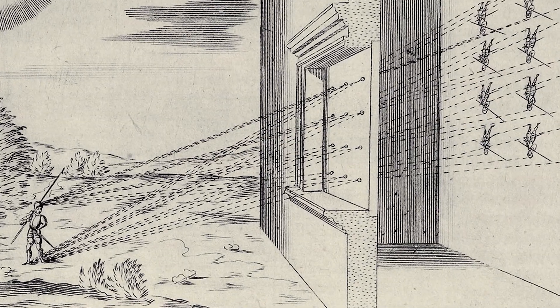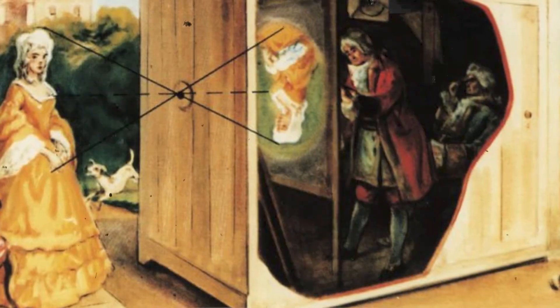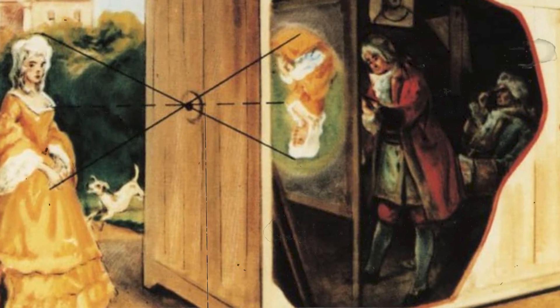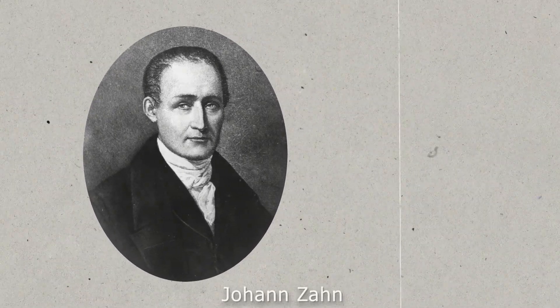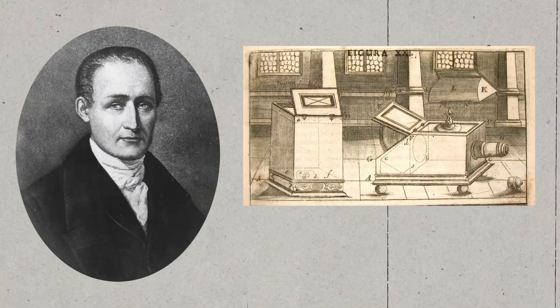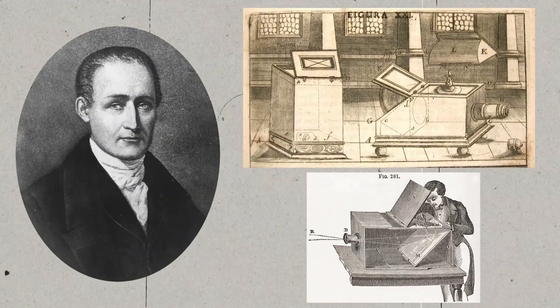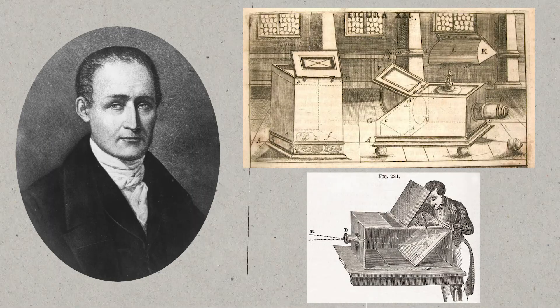The Camera Obscura pioneered the idea of capturing images through optics. Leonardo da Vinci, in the 15th century, extensively studied the Camera Obscura and its applications. His sketches and writings documented his understanding of the device and its ability to project realistic images. In the 17th century, Johann Zahn, a German Jesuit, proposed the idea of a portable Camera Obscura for sketching. Although he didn't build a working model, Zahn's designs and concepts contributed to the evolving understanding of capturing images using a light-sensitive device.